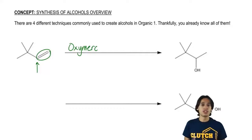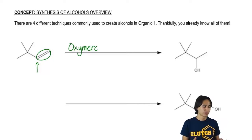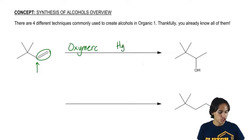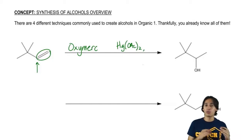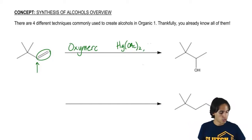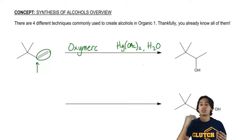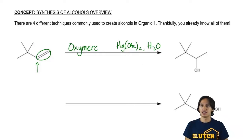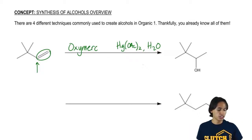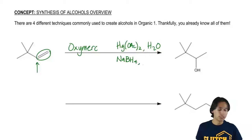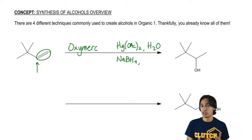So now all I have to do is fill in the reagents for oxymerc. Basically what we would have is some kind of mercury molecule — HgOAc₂ — and then water, because we want to show specifically that we're using water to add the alcohol. On the bottom of the arrow we did the reduction step. Remember that the full name of this reaction is oxymercuration-reduction. The reduction is completed by NaBH₄, which we will later learn is a reducing agent.